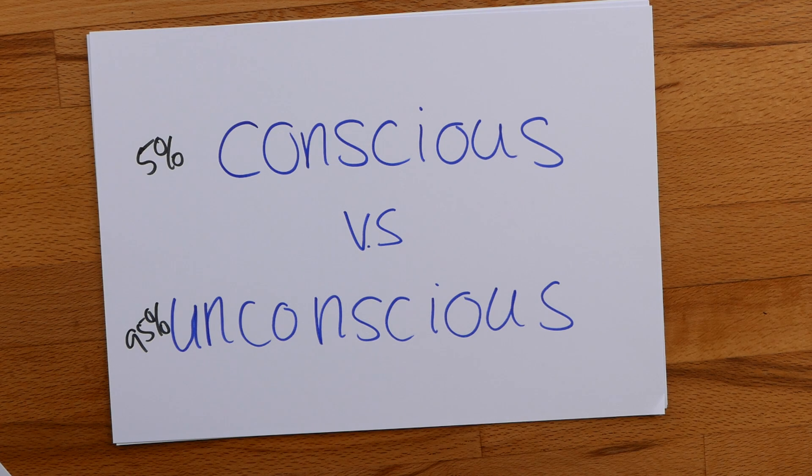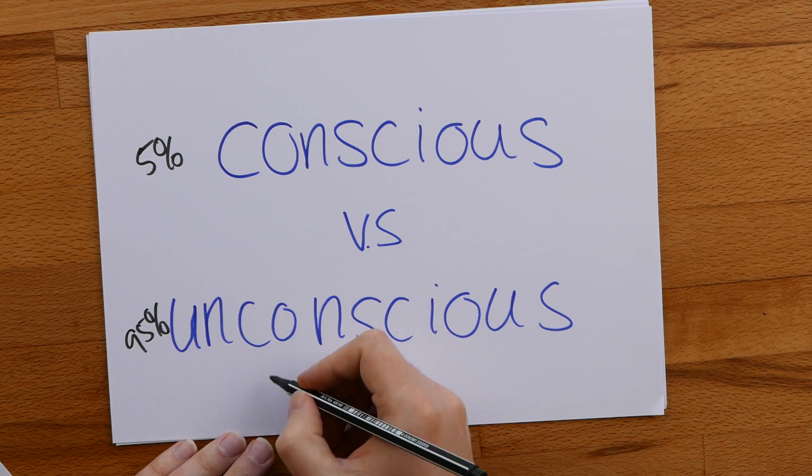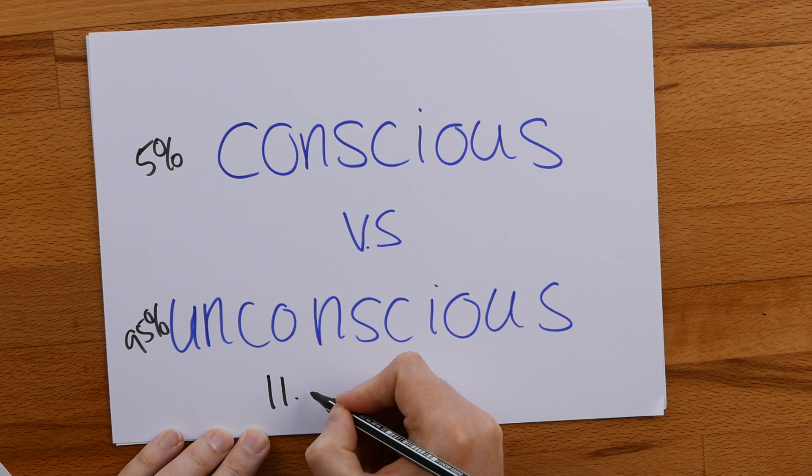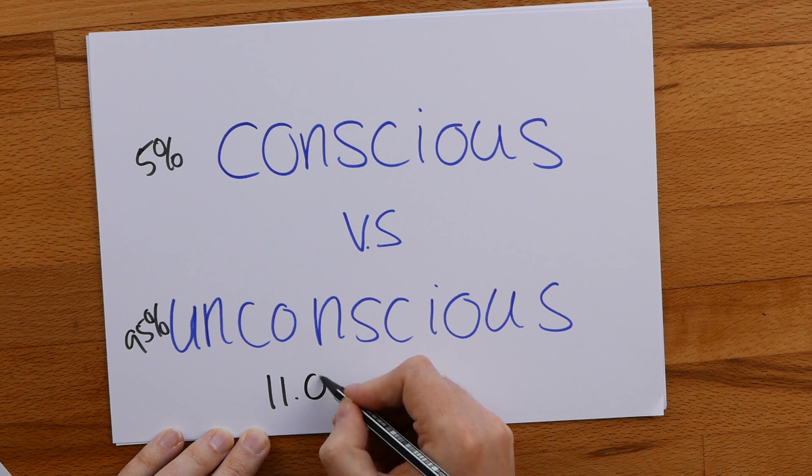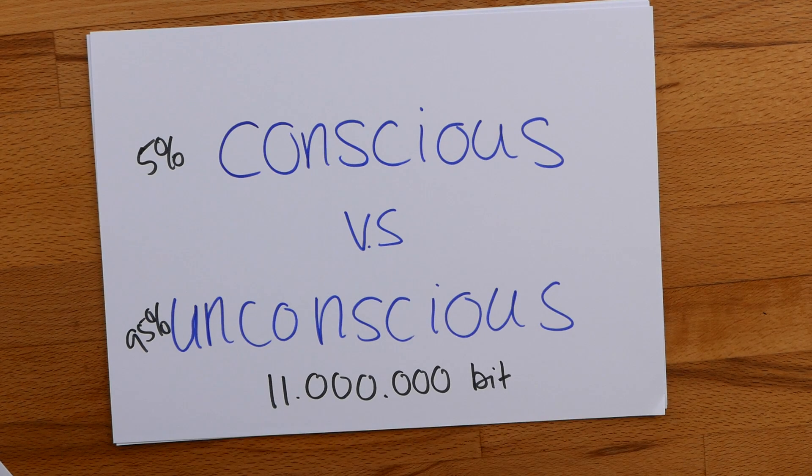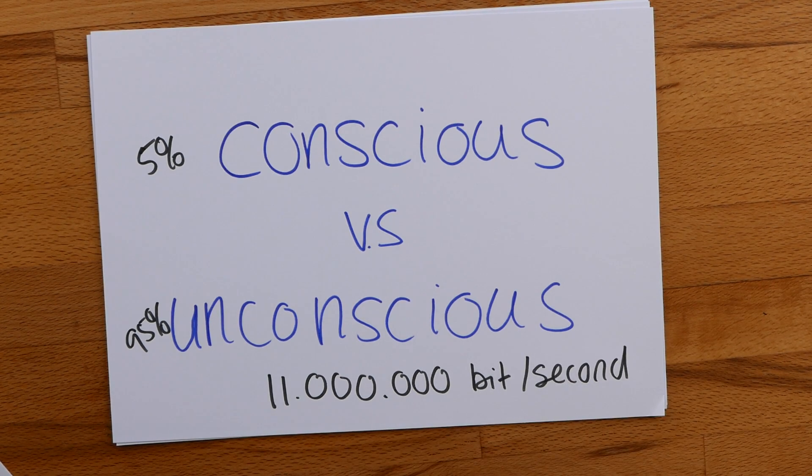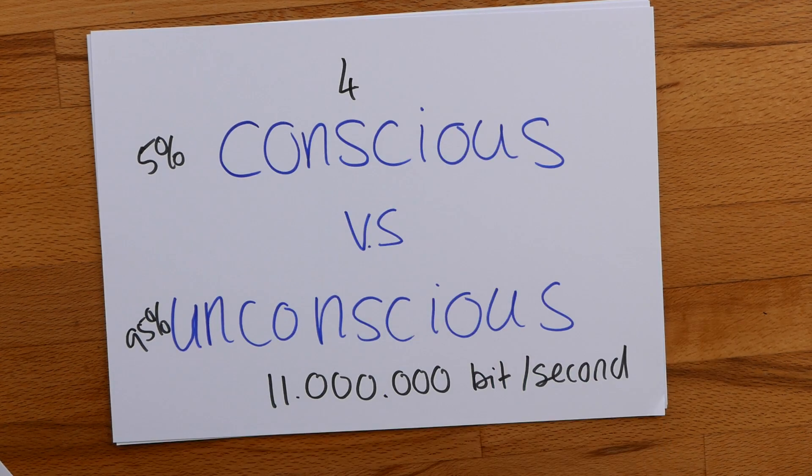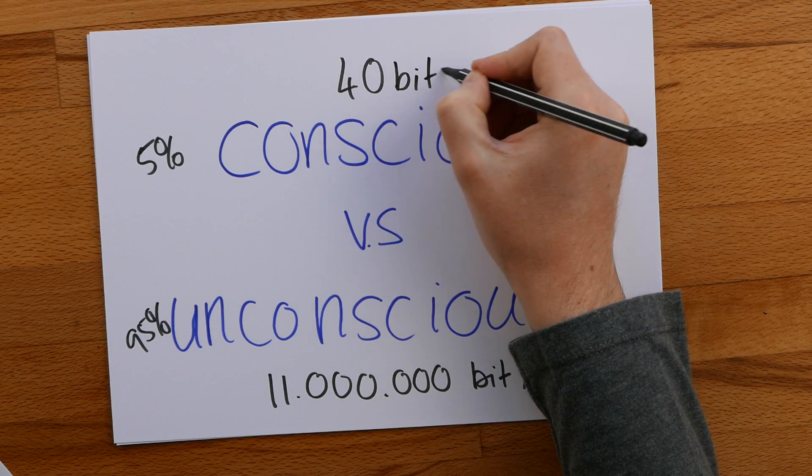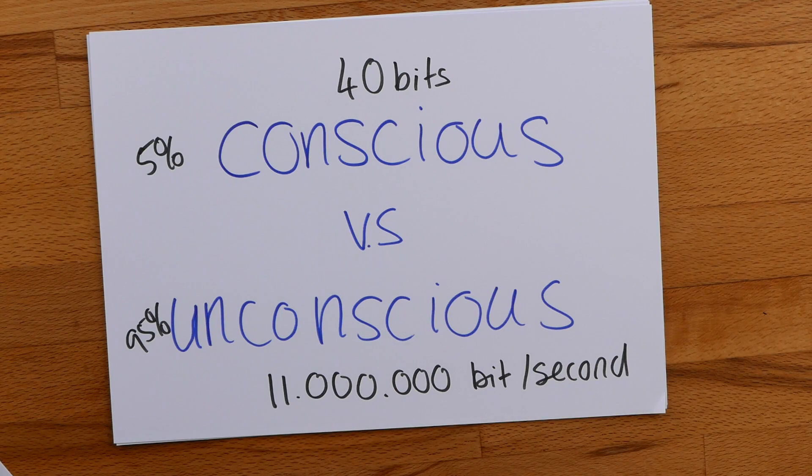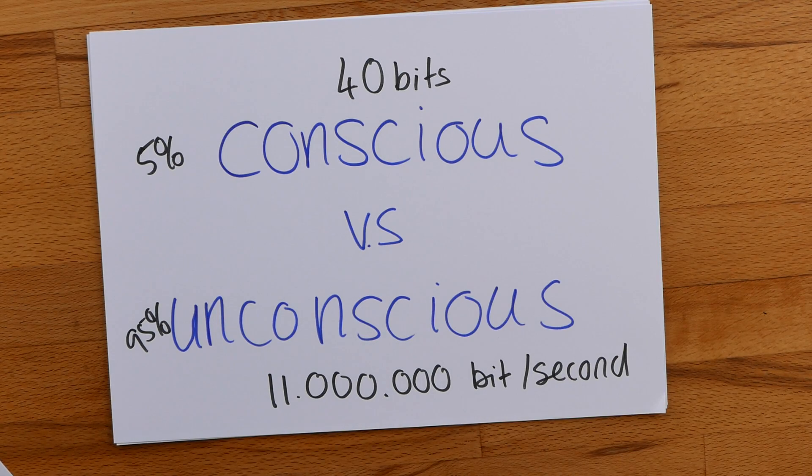Every second our brain processes humongous amounts of data. The unconscious mind processes 11 million pieces of data per second. How much do you think the conscious mind processes? It starts with a 4, then a 0, and that's it. 40 bits of data. That's all our conscious mind processes per second.